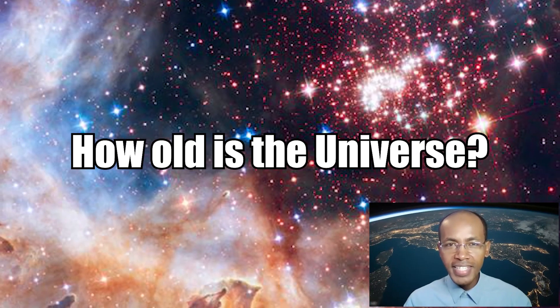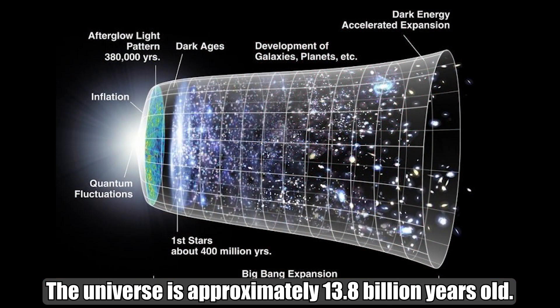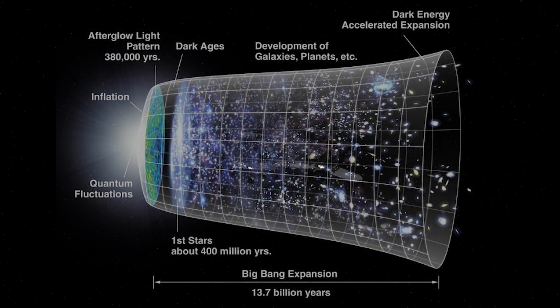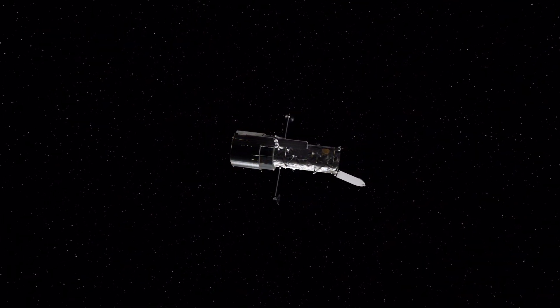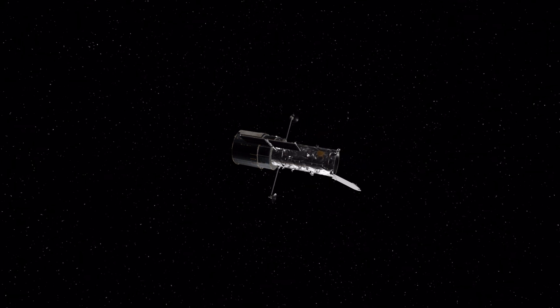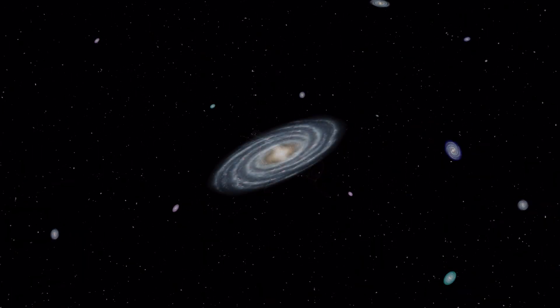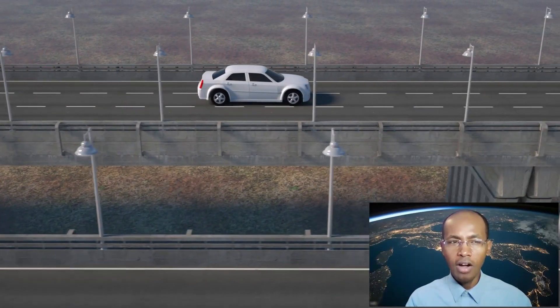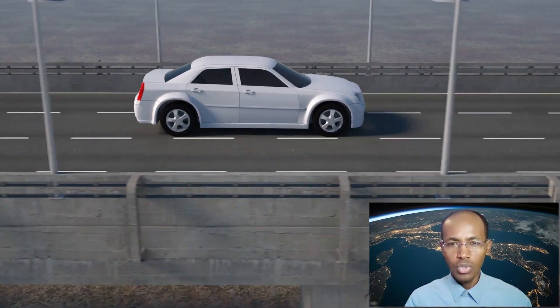First question, how old is the universe? The universe is approximately 13.8 billion years old. The Hubble Space Telescope uses the universe's expansion rate to determine its age. Hubble calculates this rate by measuring the distances between nearby galaxies. This is like measuring the speed of a car and how far it has gone to find out how long it has been driving.